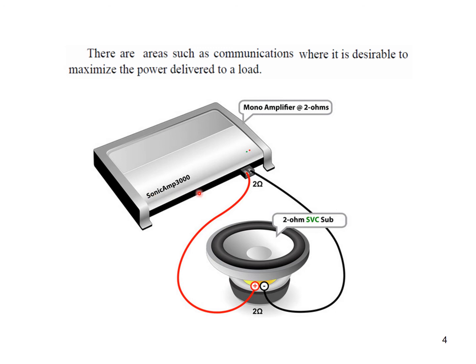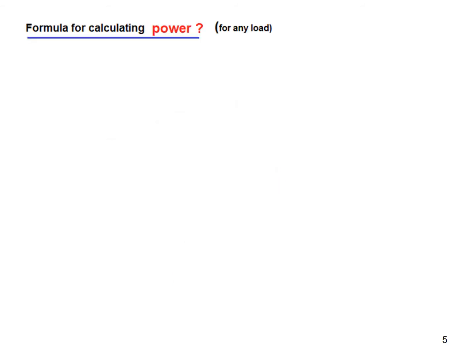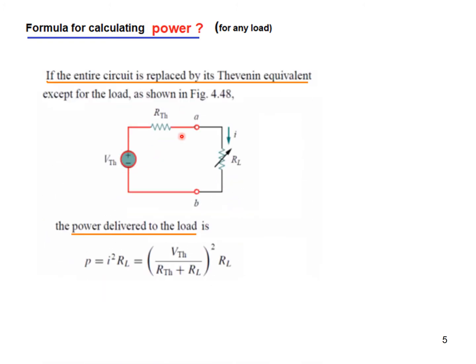For a practical example: consider an amplifier connected to a speaker. If the speaker has a resistance of 2 ohms and the amplifier also has 2 ohms resistance, then maximum power transfer takes place. To calculate power for any load, we use Thevenin's theorem — replace the entire circuit with its Thevenin equivalent and connect the load. The current is V_Thevenin divided by (R_Thevenin plus R_L), and the power is I² × R_L.